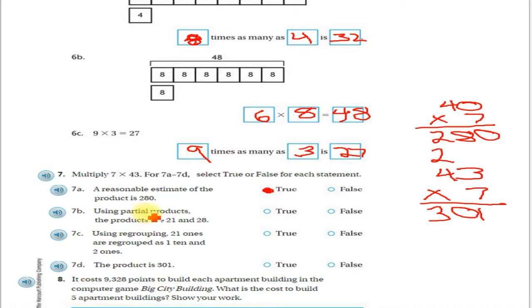Okay, using partial products, the products are 21 and 28. So remember, partial products are when we break this multiplication problem into its parts - 40 plus 3. So I'm going to come up here and I'm going to break it into 40 and 3, and I'm going to times them both by 7.